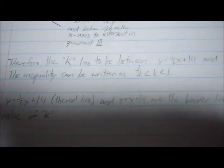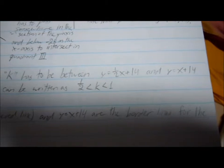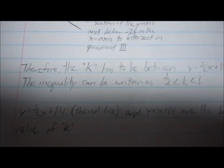Therefore, the value of k has to be between y equals 1 half x plus 14 and y equals x plus 14. So the inequality can be written as 1 half is less than k, which is less than 1.